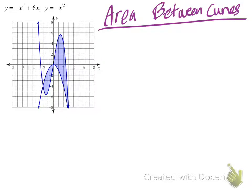Hey class, Mr. Mojan here with an example of a calculus problem dealing with the area between two curves. The question is to find the exact area of the shaded region, which is subdivided into two parts.